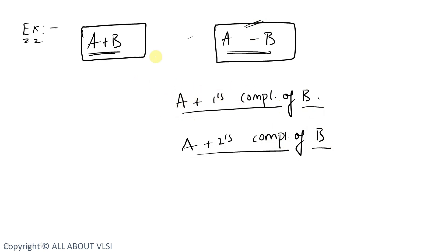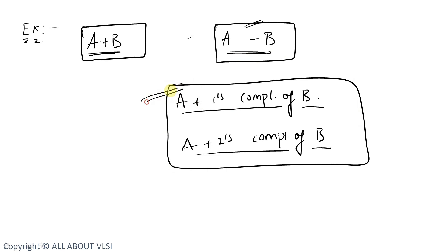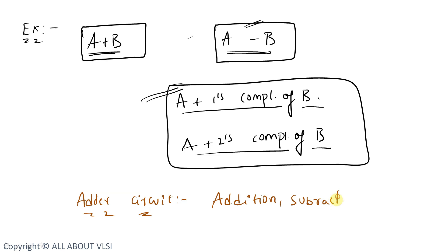We can directly perform A minus B, so why choose the complement method? The reason is: using a simple adder circuit, I can perform both addition and subtraction. The subtraction is done using complements. So instead of having two separate circuits for addition and subtraction, I can use a single circuit where subtraction is done using the complement method.